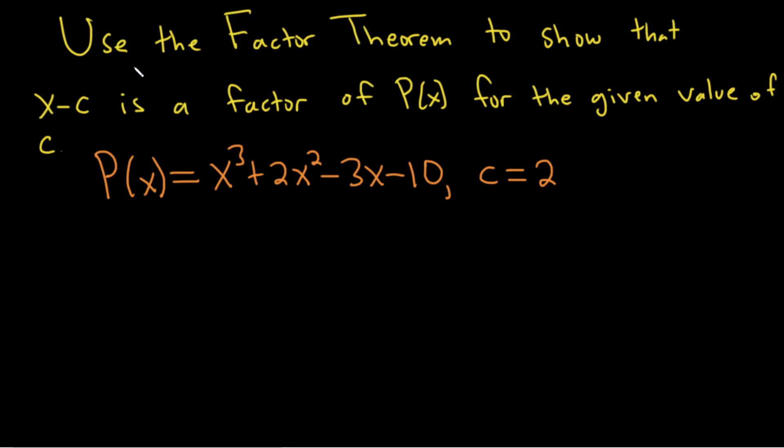Hi, in this problem we're being asked to use the factor theorem to show that x minus c is a factor of P of x for the given value of c. So what does all of that mean?